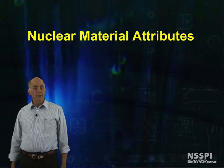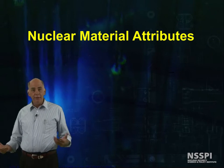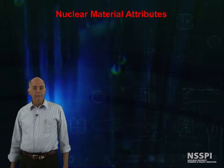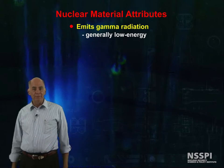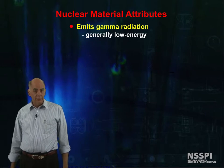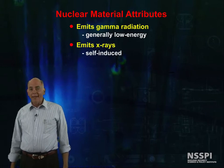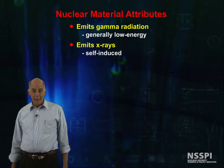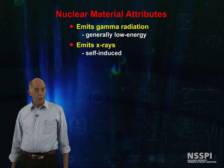What properties do nuclear materials have that allow us to detect and identify them? Generally, they all emit gamma radiation, and typically these gamma rays are low energy, meaning a few hundred keV or less. They also emit x-rays, which are self-induced by alpha decay, beta decay, or from absorption of gamma radiation, which in turn induces these x-rays.